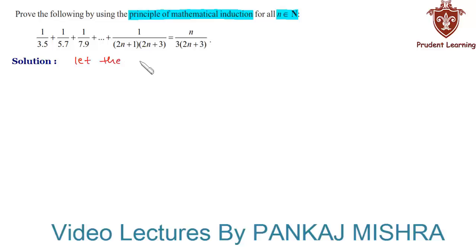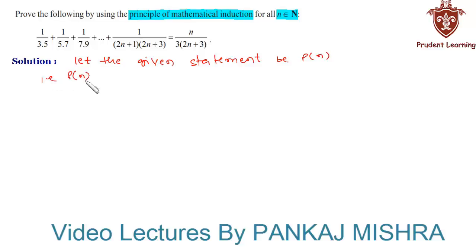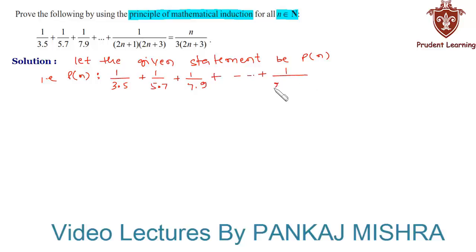Let the given statement be P(n), such that 1/(3×5) + 1/(5×7) + 1/(7×9) + ... + 1/((2n+1)(2n+3)) equals n divided by 3 times (2n+3).